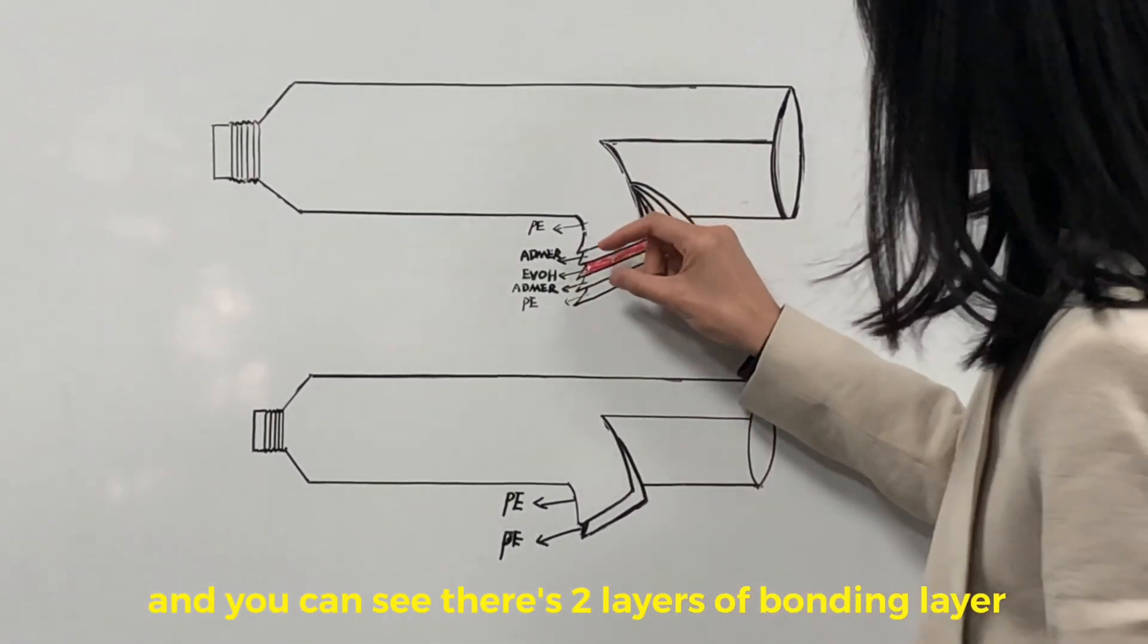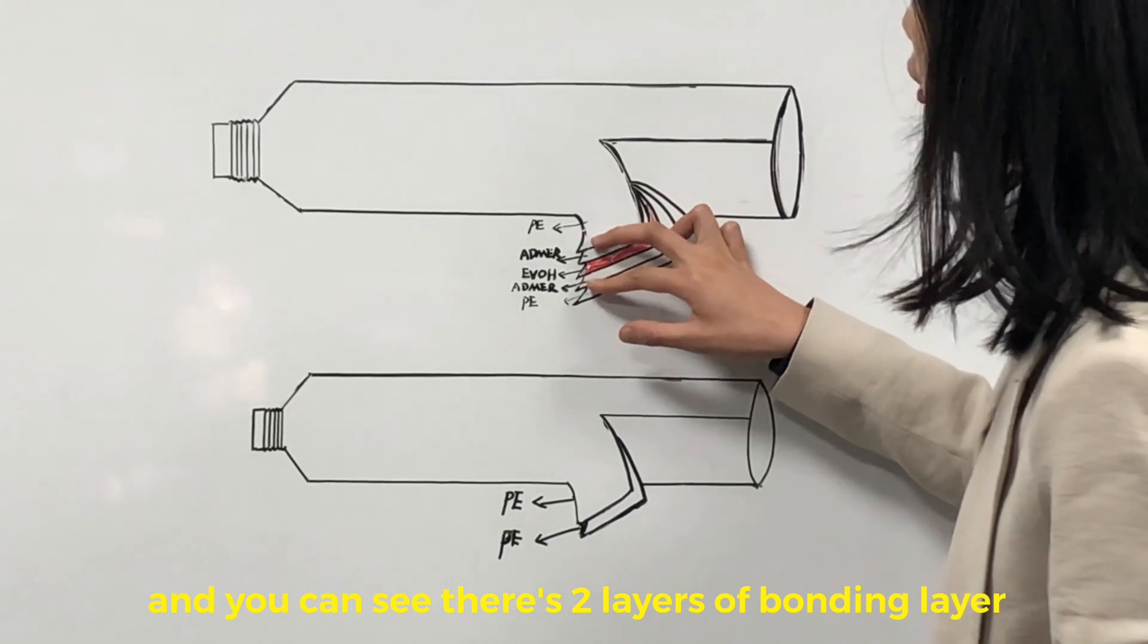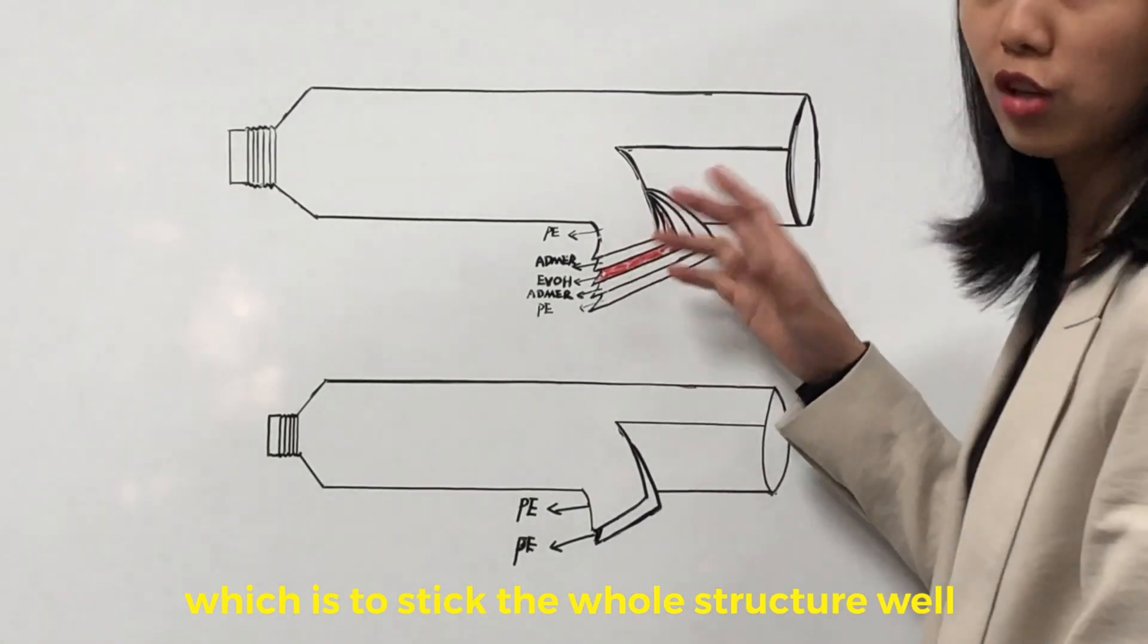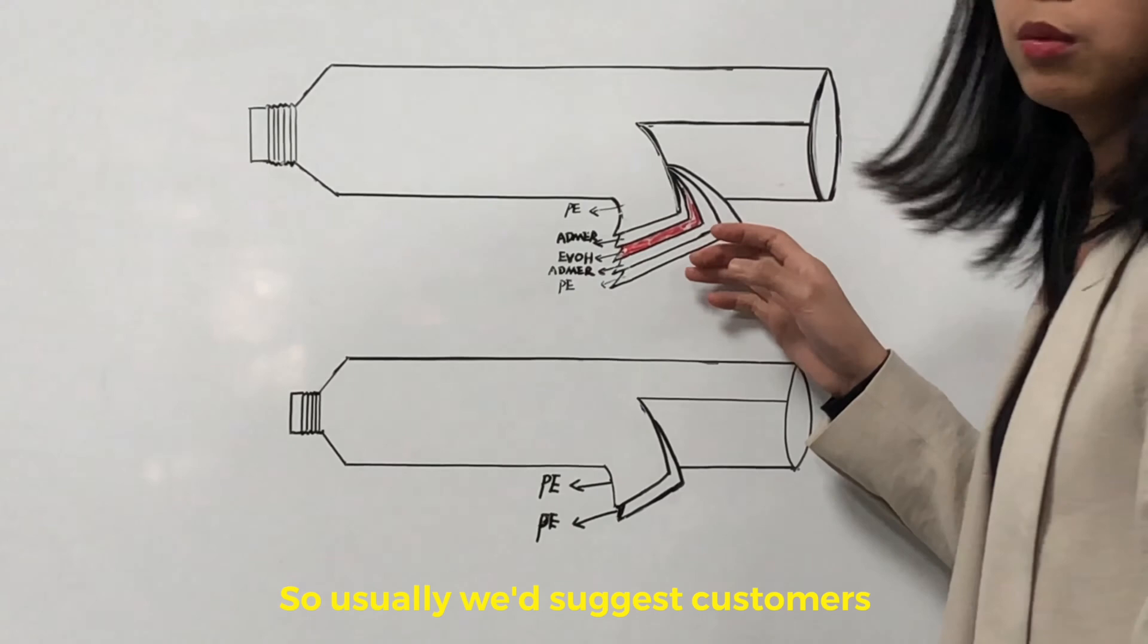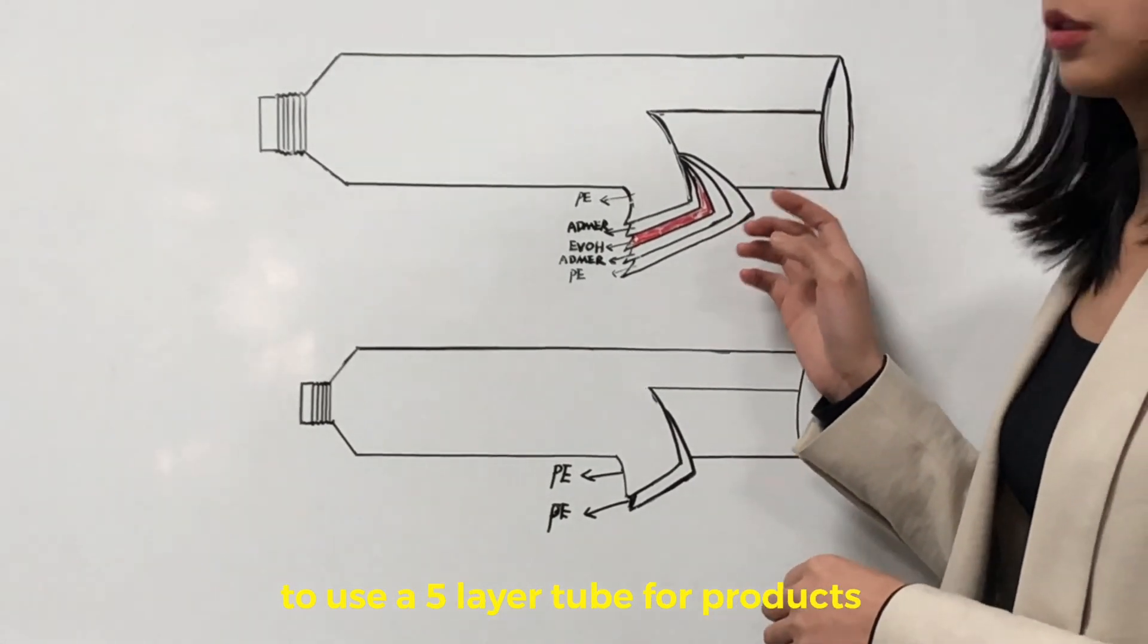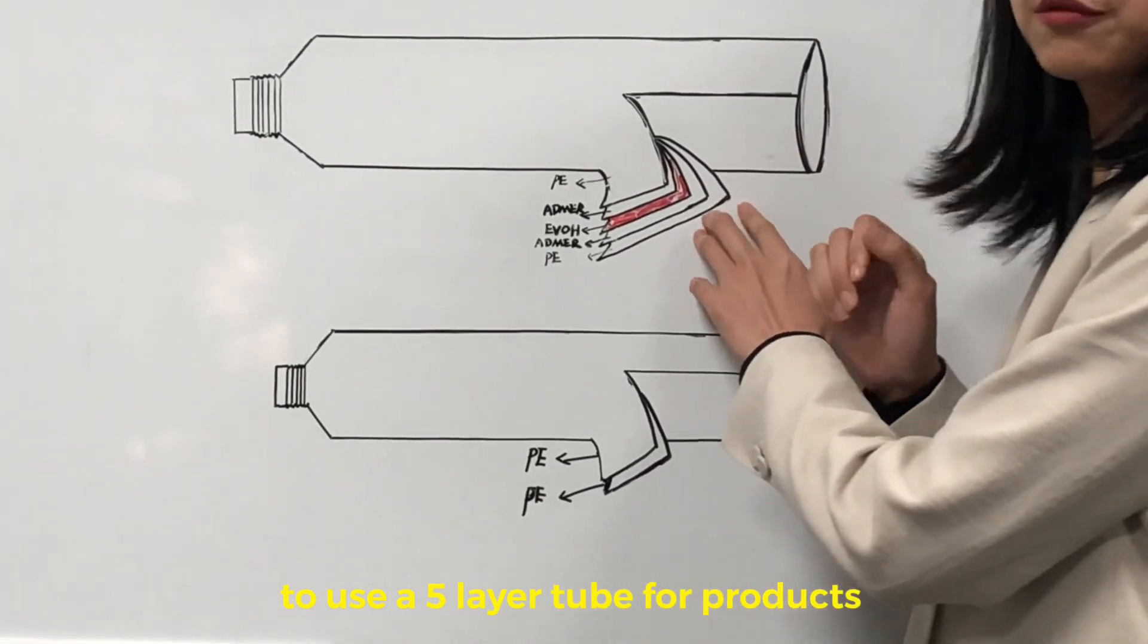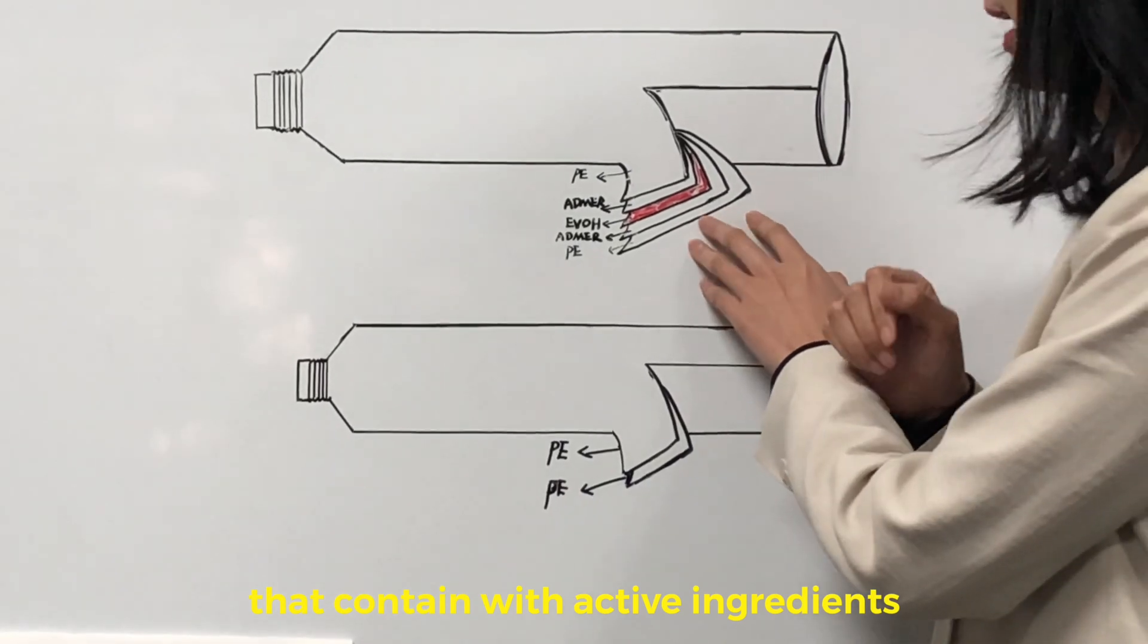And you can see there is two layers of bonding layers which is to stick the whole structure well. So usually we will suggest customers to use a five layer tube for products that contains reactive ingredients.